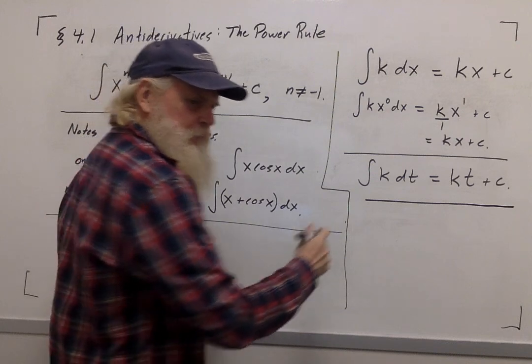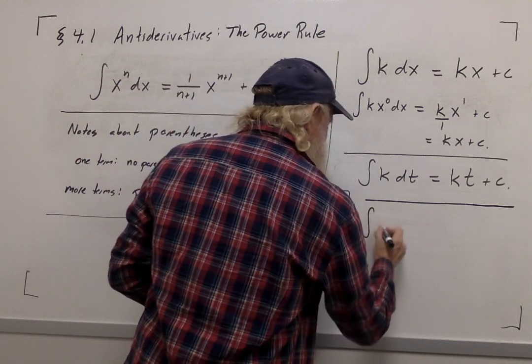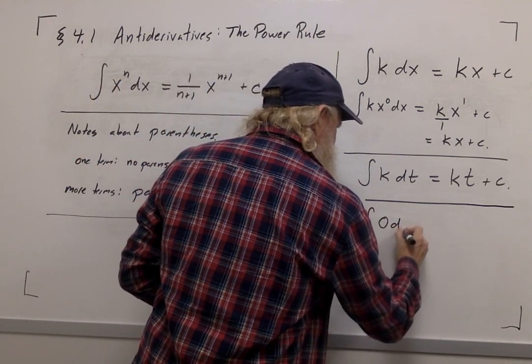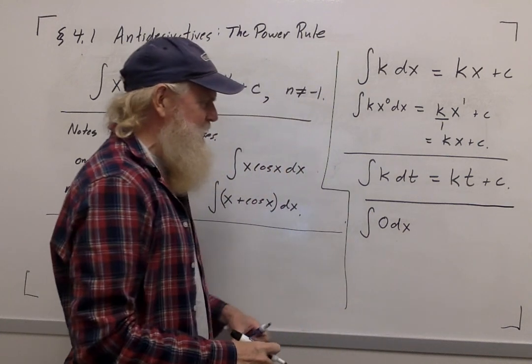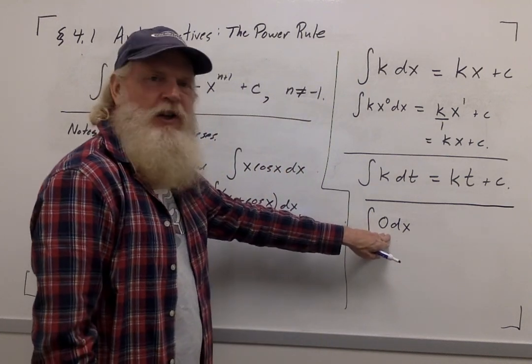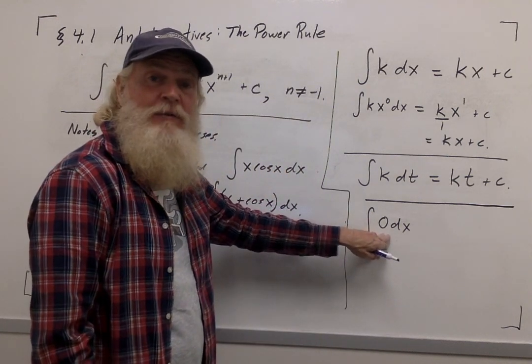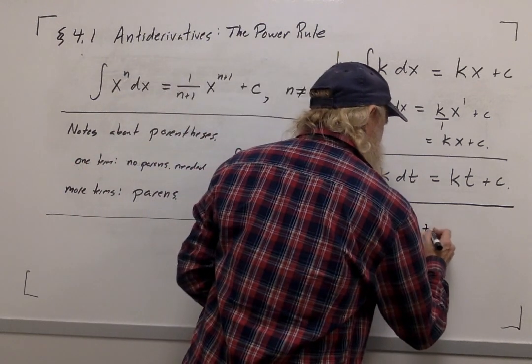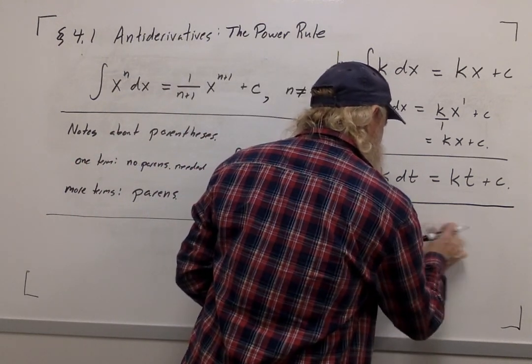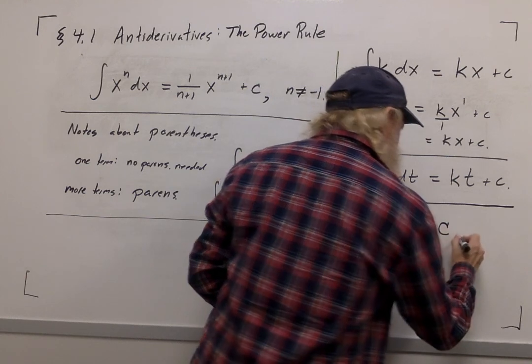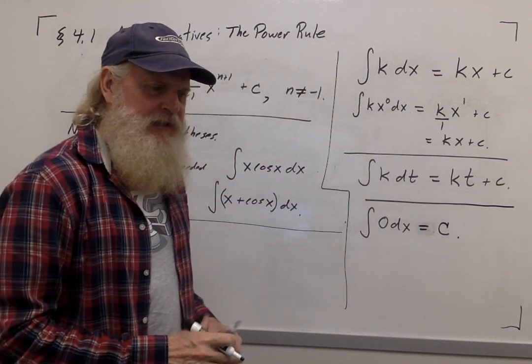And one other quick note. The integral of zero with respect to x. Here we want to find a function whose derivative is zero. Well, of course, that's going to be a constant. So the anti-derivative of zero is simply c.